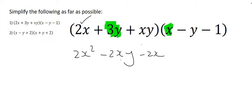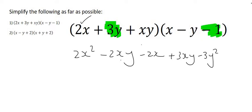We'll start by multiplying 3y with the x in the other bracket, so that's going to give us positive 3xy. Then we're going to multiply it by this negative y, and that's going to give us negative 3y squared. And then we're going to multiply it with minus 1 and that's going to give us negative 3y.